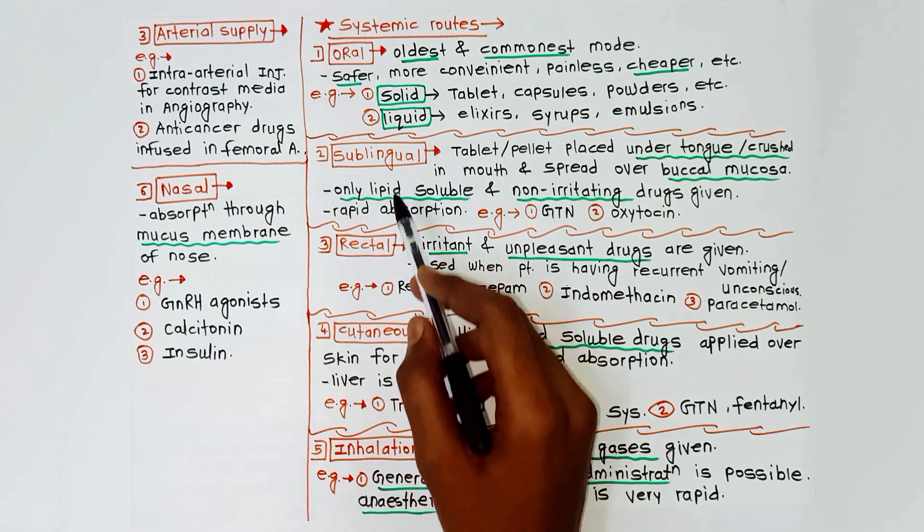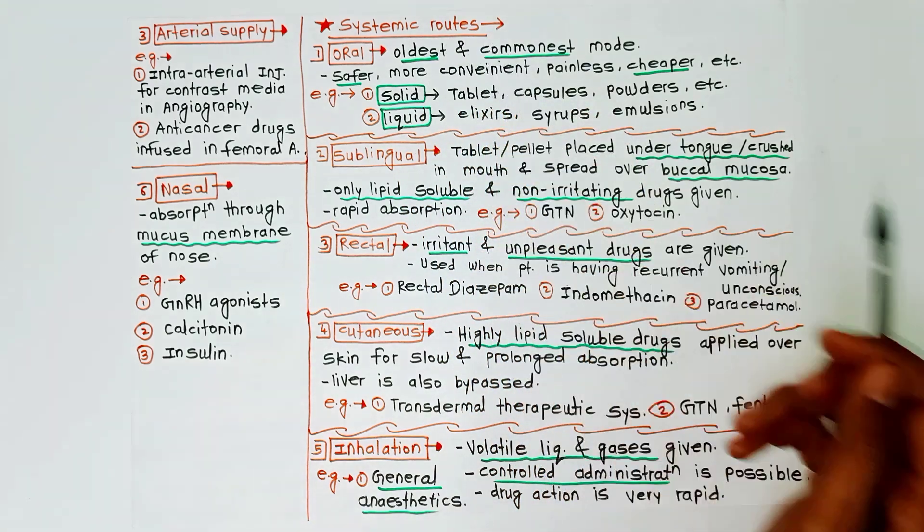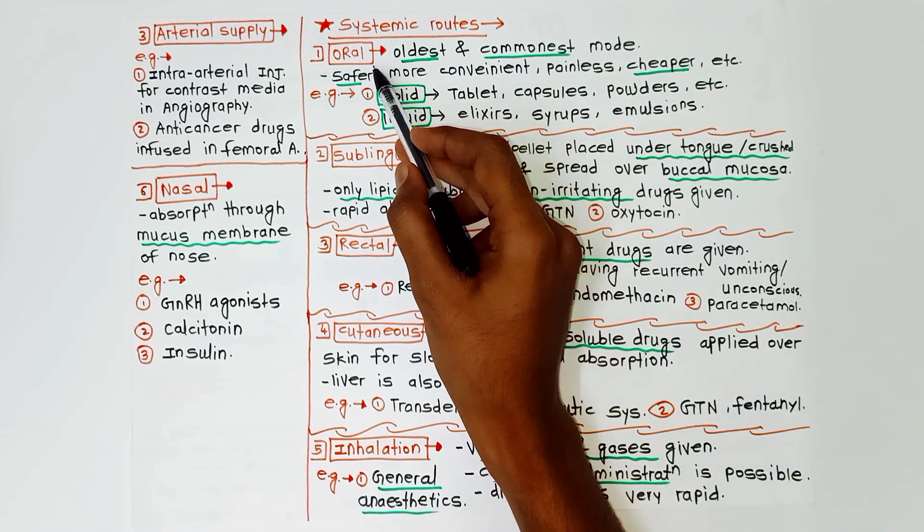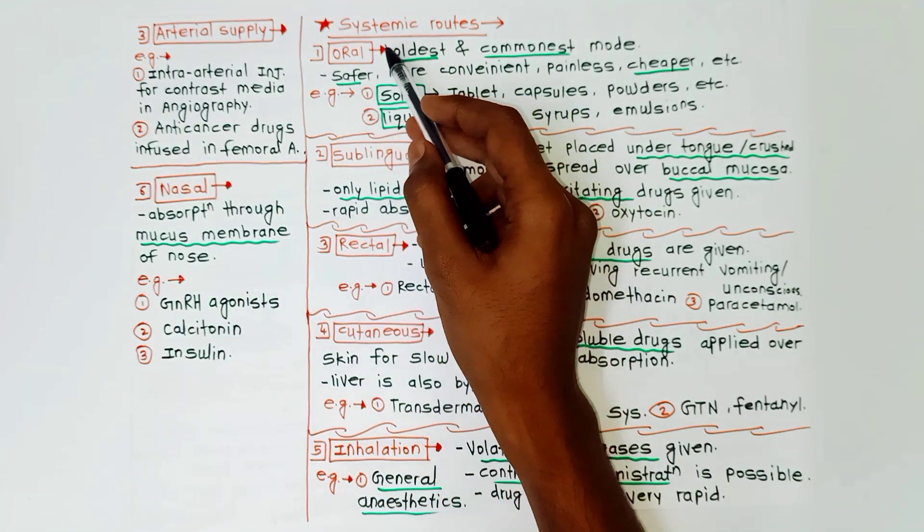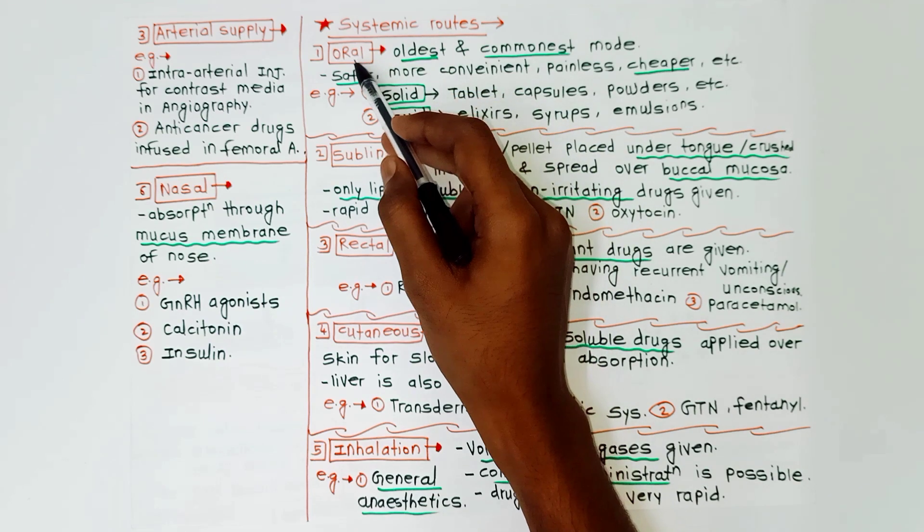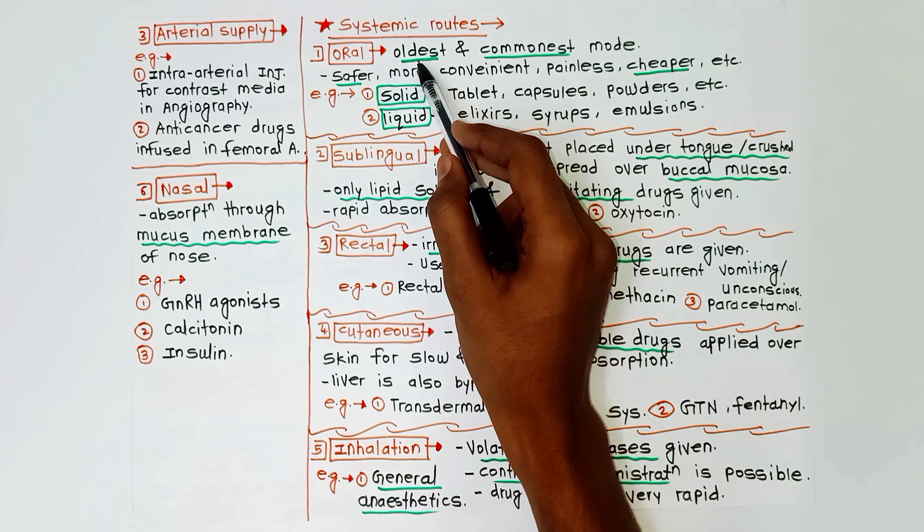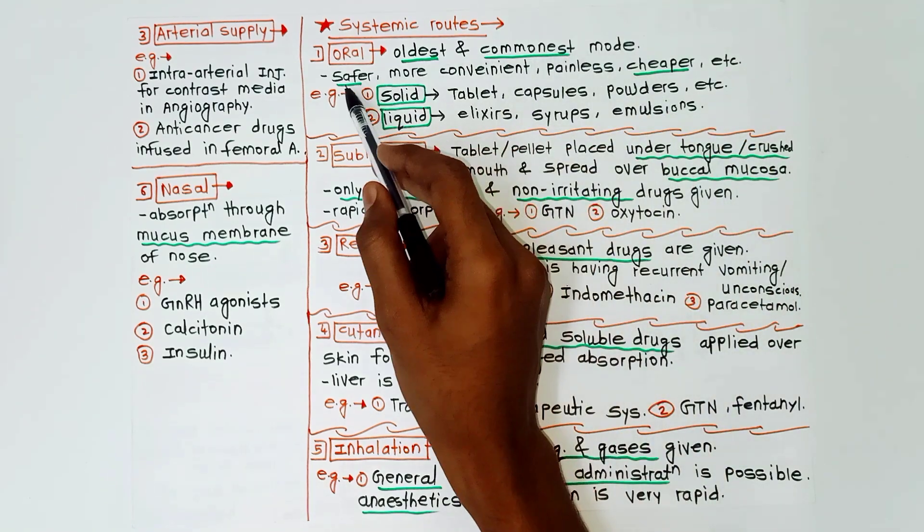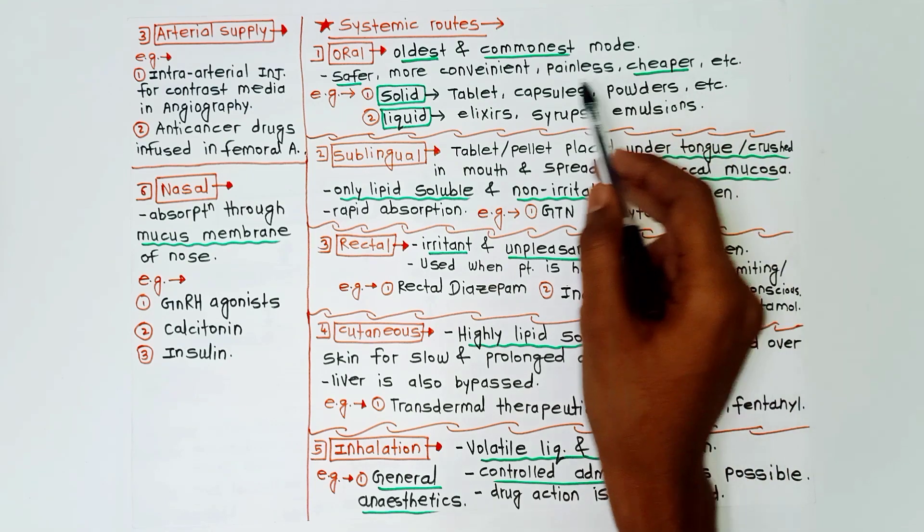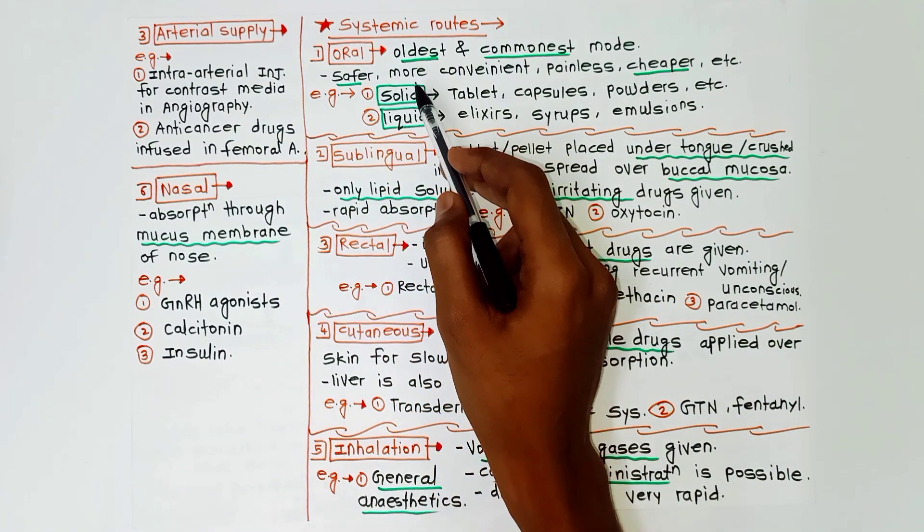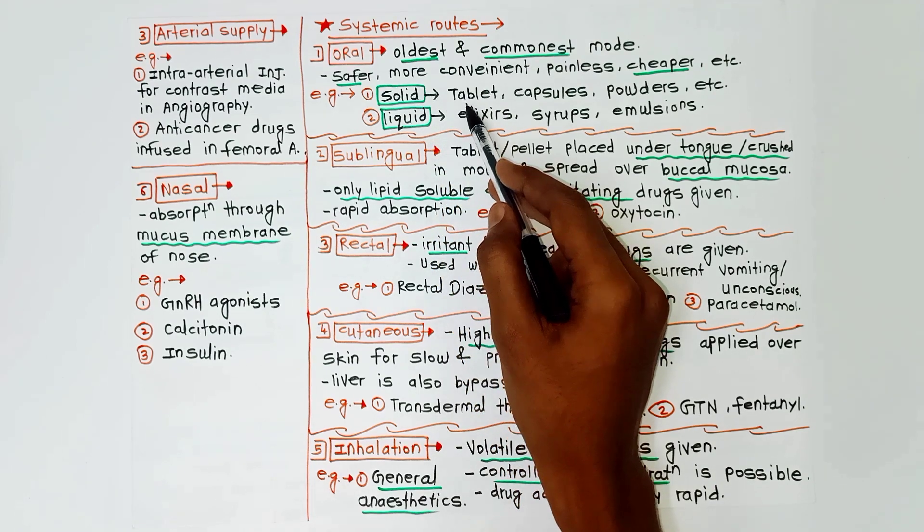Now we will learn the systemic routes of drug administration. There is oral route. The trick to remember I already told you: PINK ORS. We will go one by one. Oral route is the oldest and commonest route. It is safer, more convenient, painless, and cheaper.